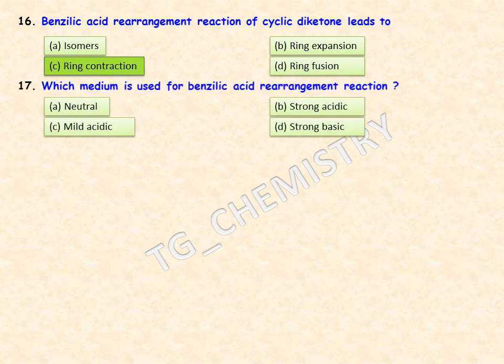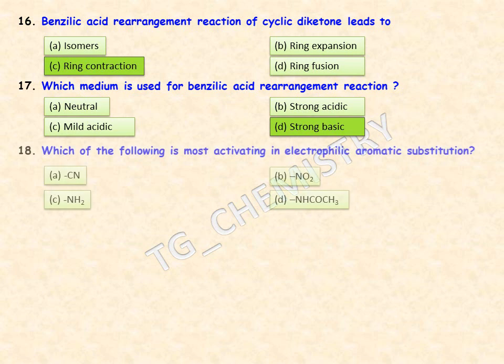Which medium is used for benzylic acid rearrangement reactions? The right answer is that a very strong basic condition is necessary for benzylic acid rearrangement. Next: which of the following is most activating in electrophilic aromatic substitution? Options are cyano, nitro, primary amine, and NHCOCH₃.